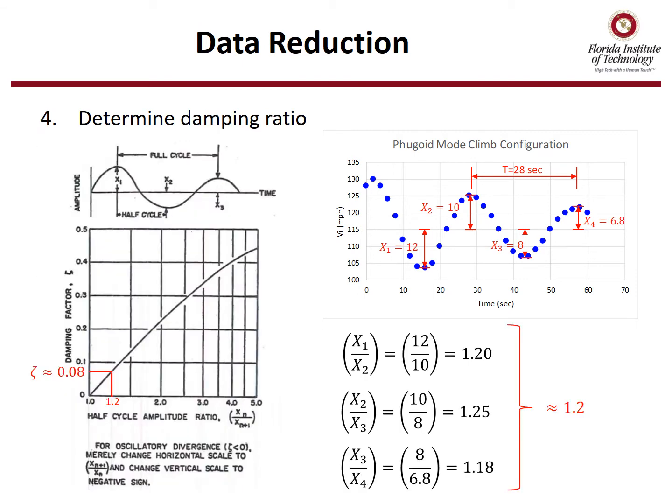Step four is to determine the damping ratio using this damping ratio chart on the left, where you input half cycle amplitude ratio on the x-axis and then read the corresponding damping factor on the y-axis. The half cycle amplitude ratio is any x over the next x. And so I showed three different versions based on the x1, x2, x3, and x4 from the graph above to show you that you can ratio any two of these, and you should get approximately the same value. In this case, the ratios are all about 1.2. So then take 1.2 and go to the half cycle amplitude chart and then find the corresponding damping ratio, which is 0.08.